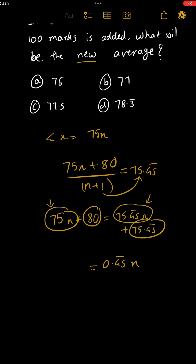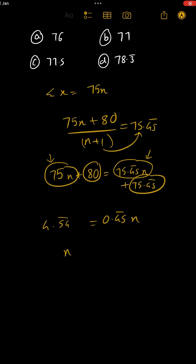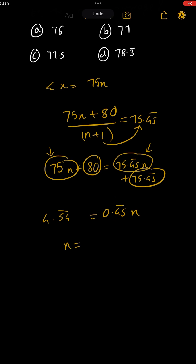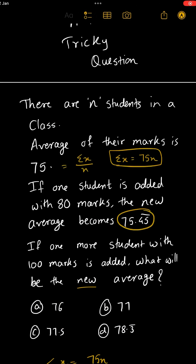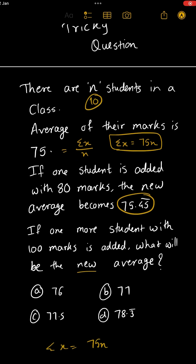And 80 minus 75.4545 gives 4.545454. So N equals 4.54545454 divided by 0.45454545. Check on your calculator — that gives you 10. That means originally there are 10 students in the class.